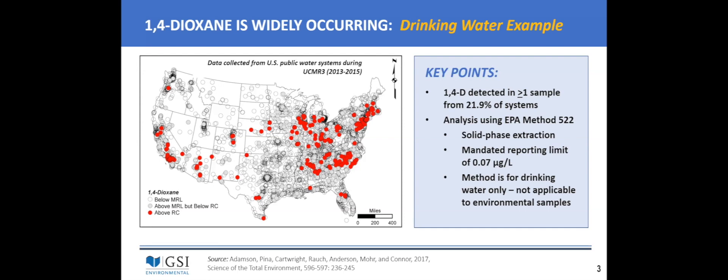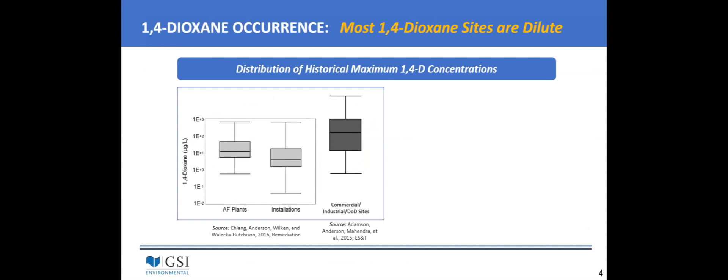EPA Method 522 — a solid-phase extraction method — was used for UCMR3 with a reporting limit of 0.07 micrograms per liter. This is an excellent method, but only applicable for drinking water. For environmental samples at contaminated sites, you're forced to rely on other available methods that have significant limitations. The concentration data from DOD installations and commercial/industrial sites show typical levels ranging from low parts per billion up to maybe 10–100 parts per billion, making site identification particularly difficult.